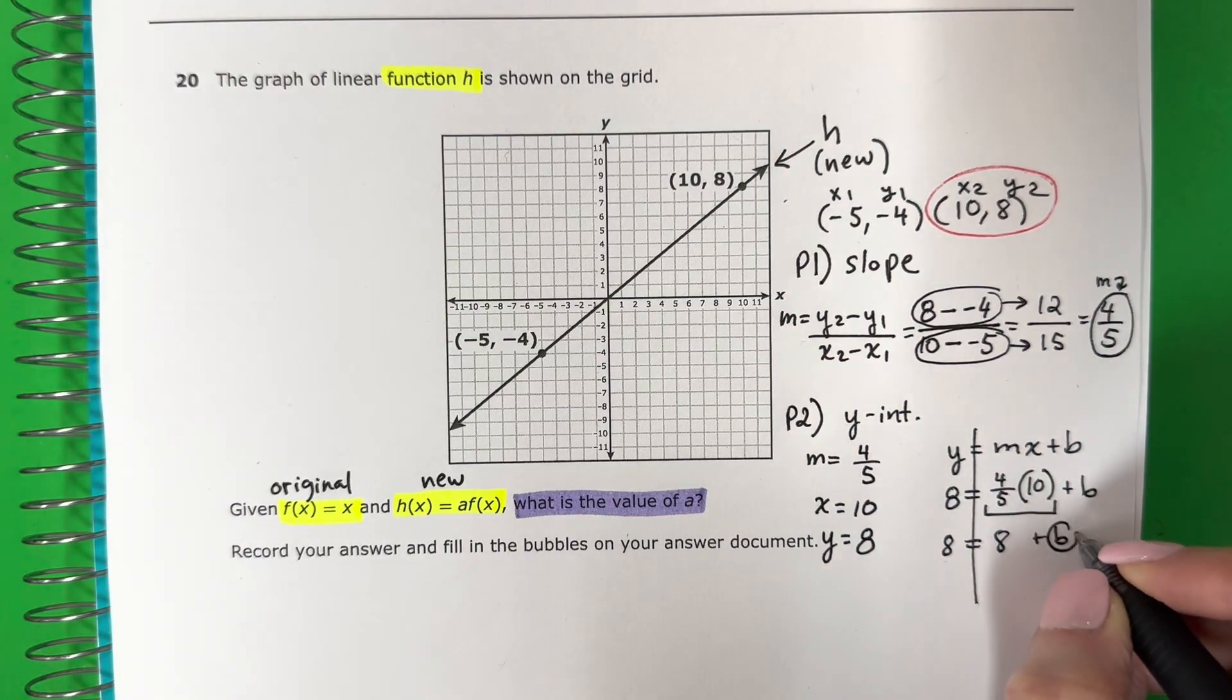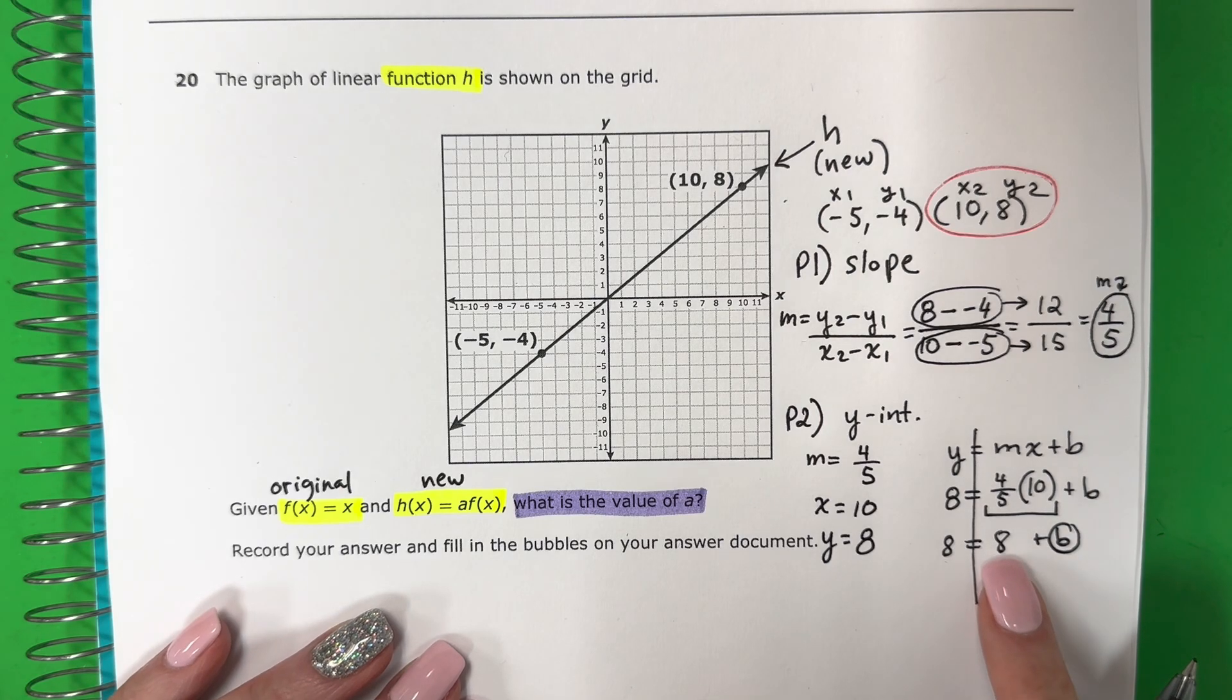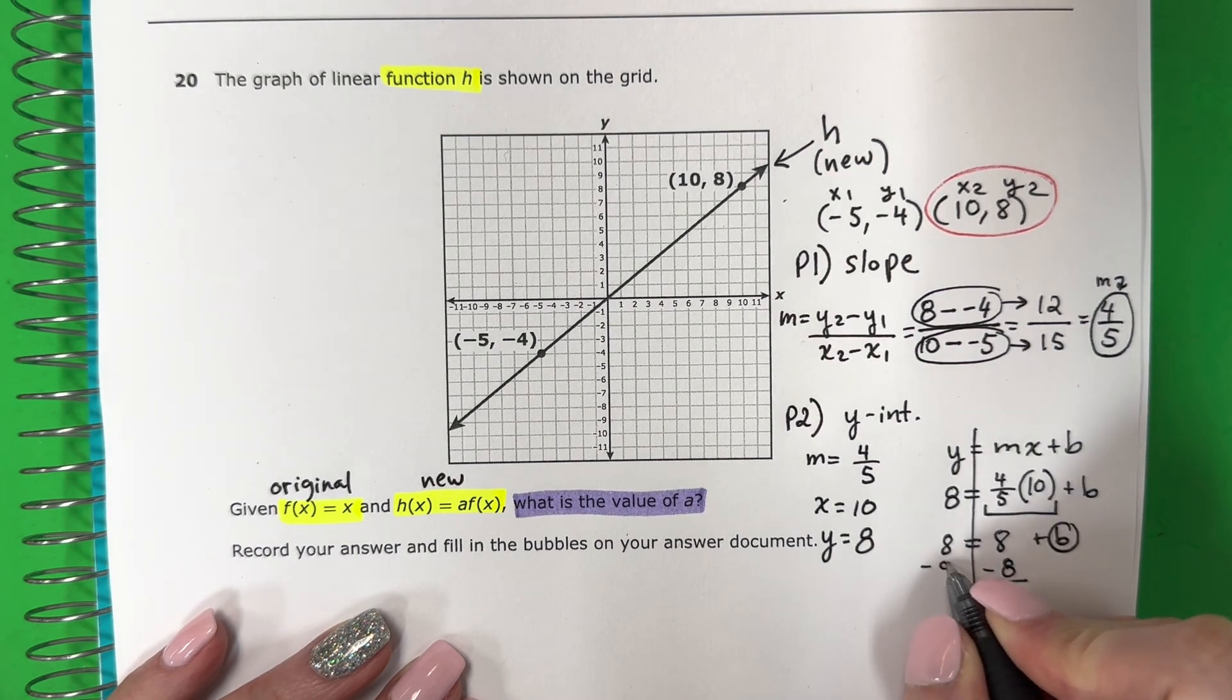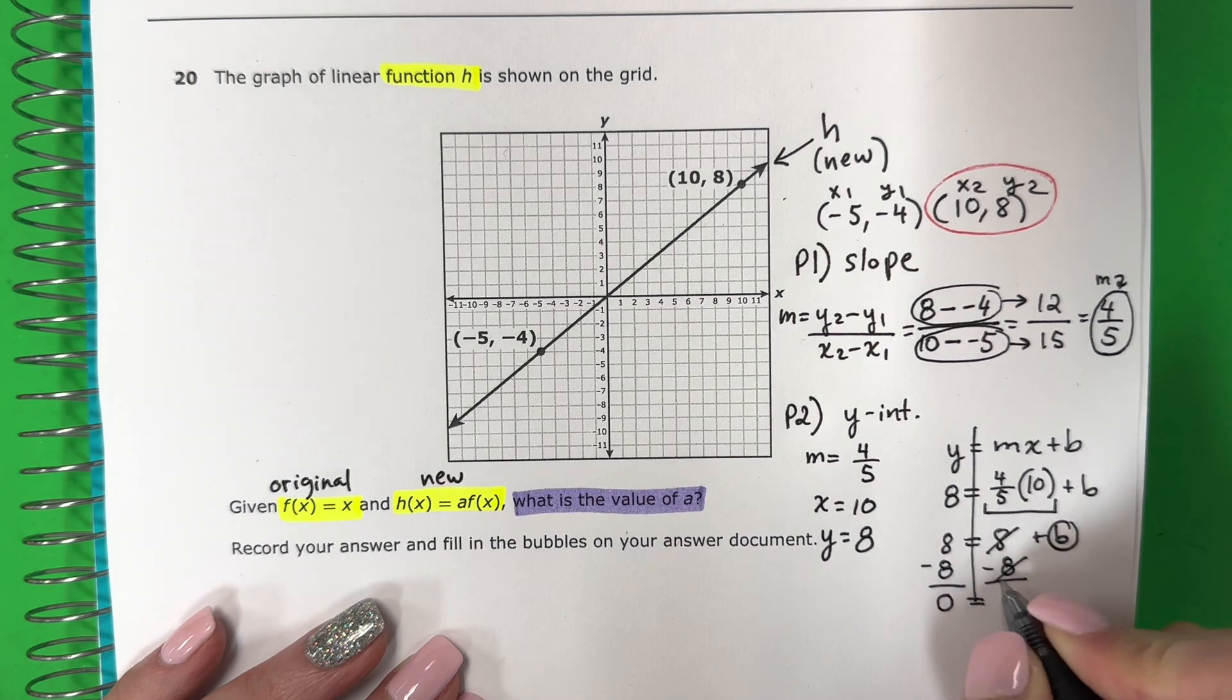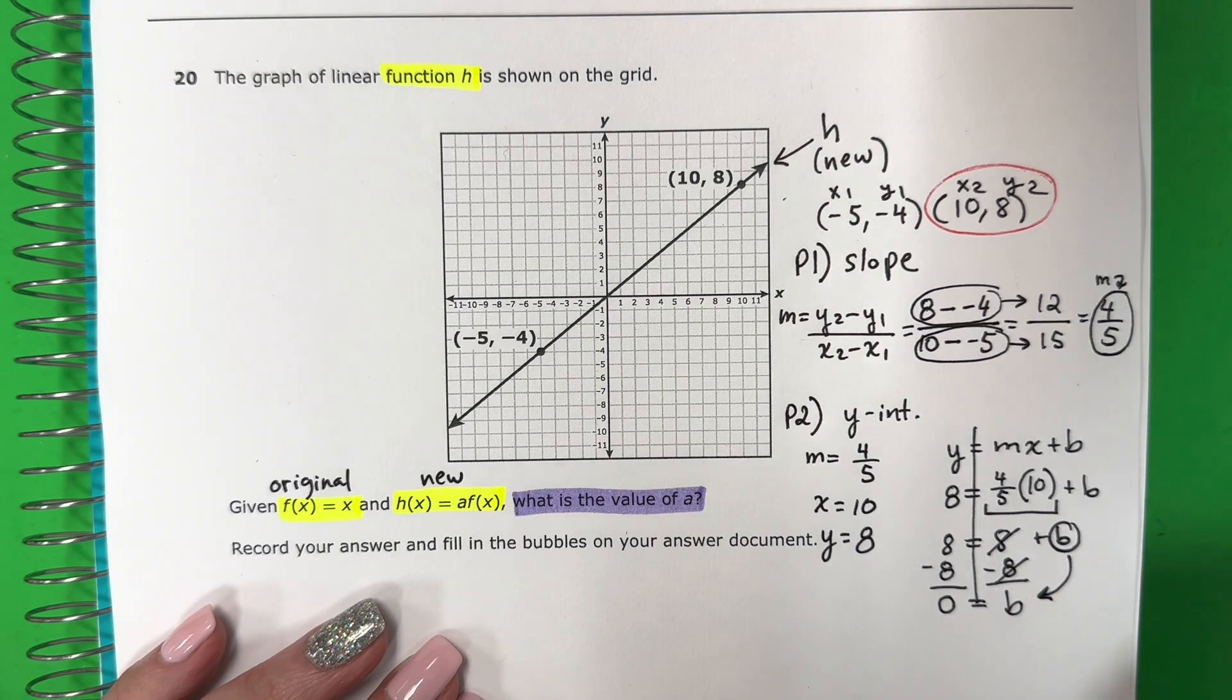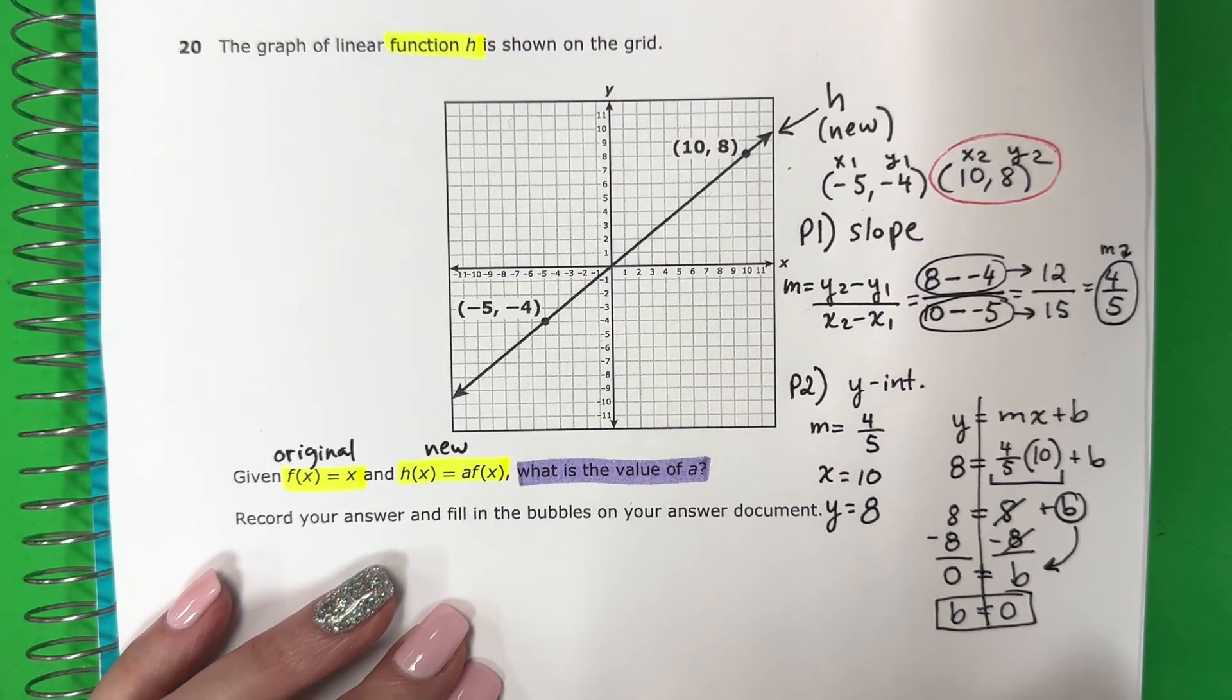I want the b alone. Quiero la b sola. So I need to move the number that's on the same side. Entonces, necesito mover el número que está en el mismo lado. This is positive 8. Es positivo 8. The opposite is negative. El opuesto es negativo. So, minus 8. Copy. Minus 8. 8 minus 8 is 0. 8 menos 8 es 0. 8 minus 8, 0. Here it cancels. Aquí se cancela. Because I have something. Porque tengo algo. Which is b. Que es la b. And let's go ahead and switch it. Vamos a cambiar el lugar. B equals 0. Okay, that's my part 2.